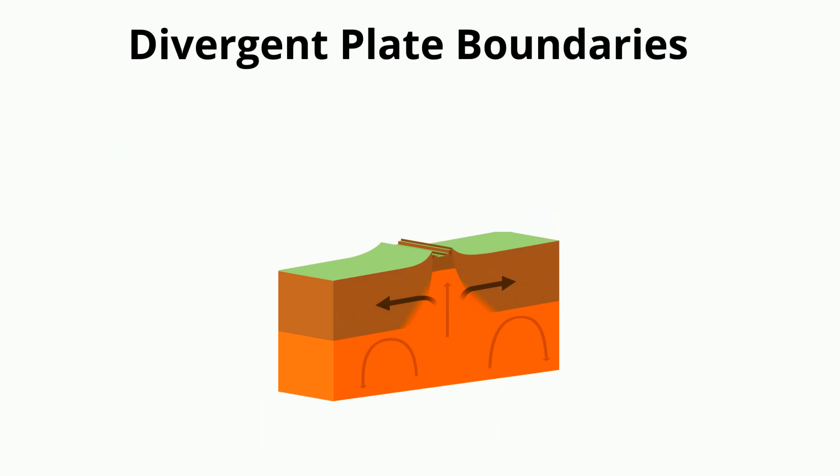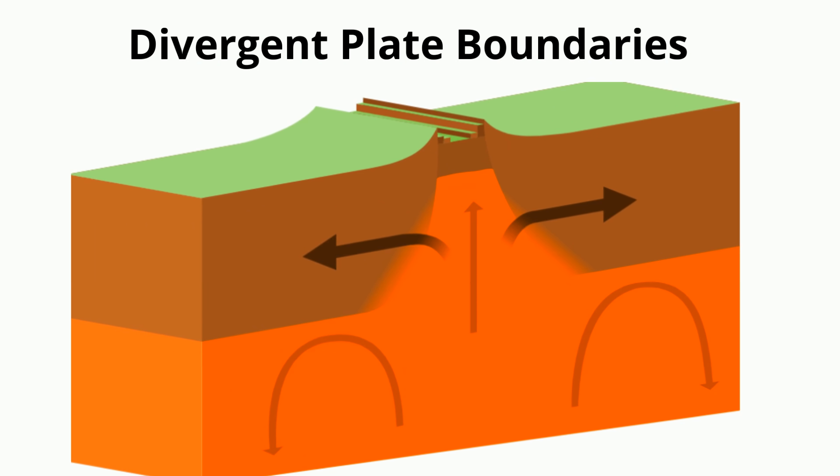This occurs above rising convection currents. The rising magma pushes up on the bottom of the lithosphere and flows laterally beneath it. This lateral flow causes the plates to move in the direction of the flow.